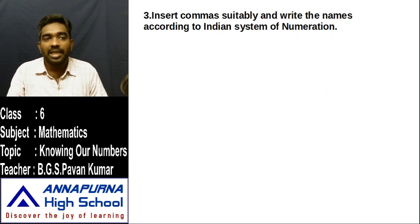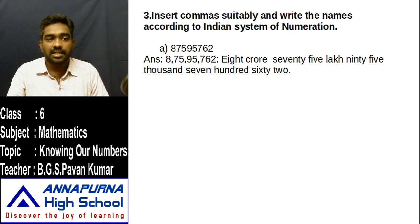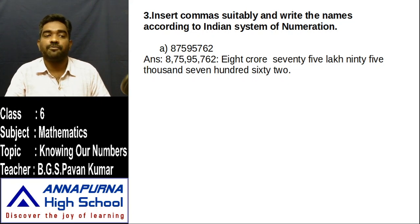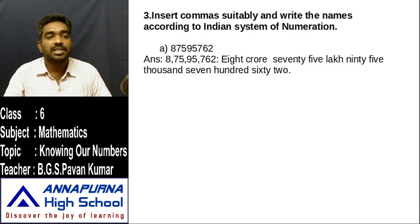Third question: insert commas suitably and write the names according to the Indian system of numeration. First one: 87595762. We insert commas — first comma after ones period, next after thousands period, next after lakhs period. The answer is 8,75,95,762 — eight crore seventy-five lakh ninety-five thousand seven hundred sixty-two.